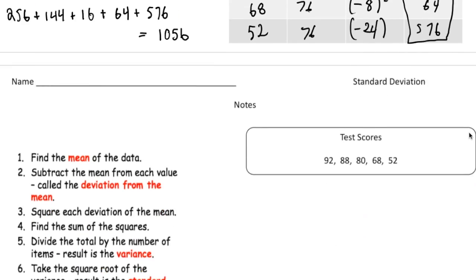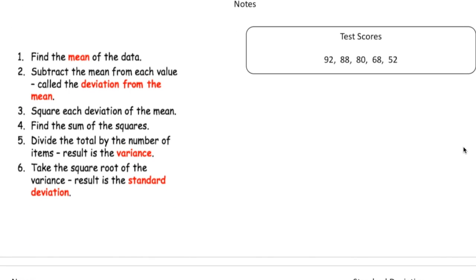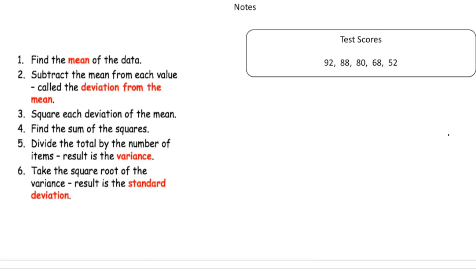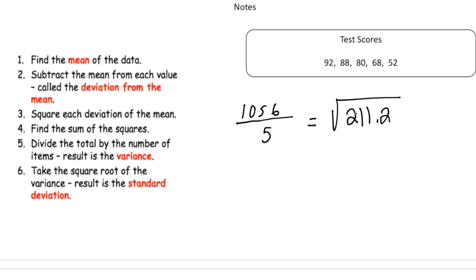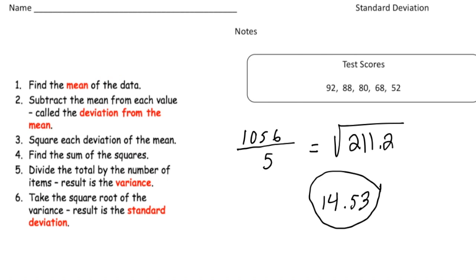Step number five: take that sum and divide it by the number of values. So 1056 divided by 5 gives us 211.2. Step number six: take the square root of that number, and we get 14.53. That is our standard deviation.